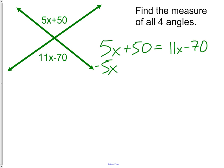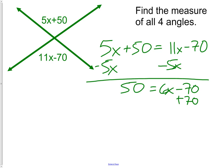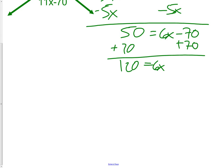Now go ahead and solve this. We move the 5x over to the 11x, and then we move the 70 over to the 50. Lastly, we divide by 6, and we get x equals 20.